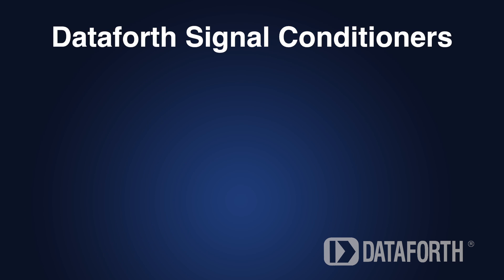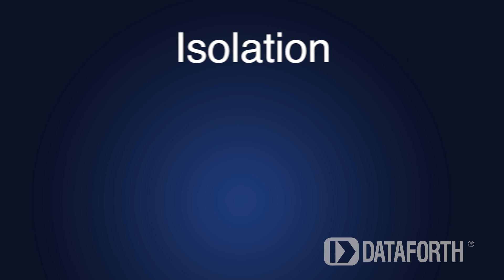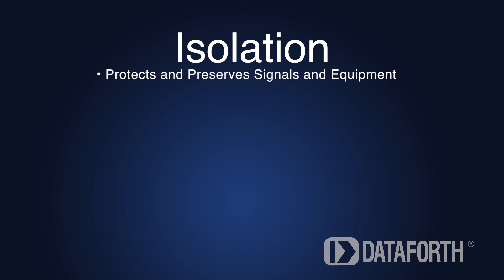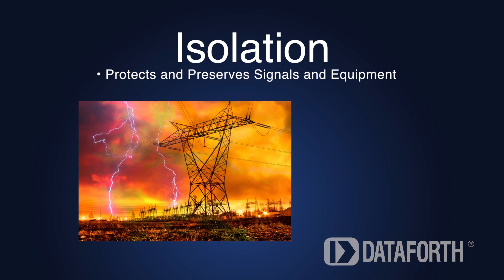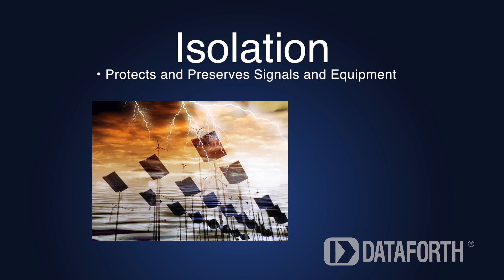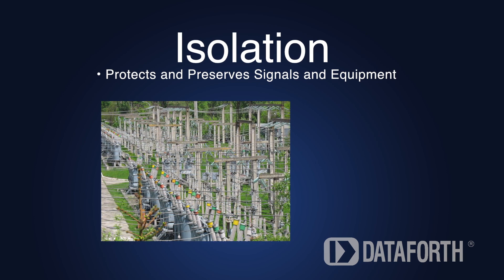Signal conditioners ensure the accuracy and reliability of the signals from sensors. To do this, they must meet three criteria. The first criterion is isolation. Isolation is critical because it protects and preserves signals and measuring equipment from the effects of hazards like electrical noise, transient power surges, and hidden ground loops.